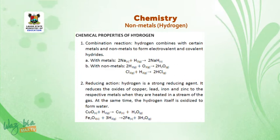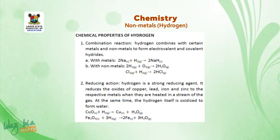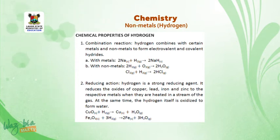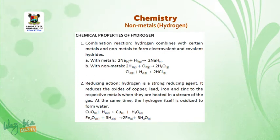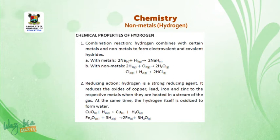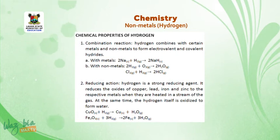Number 2 — Reducing action of hydrogen: Hydrogen is a strong reducing agent. It reduces the oxides of copper, lead, iron and zinc to the respective metals when they are heated in a stream of the gas. At the same time, the hydrogen itself is oxidized to form water. In the equation: hydrogen gas removes oxygen from the oxide of copper to form water, leaving copper metal as the residue.